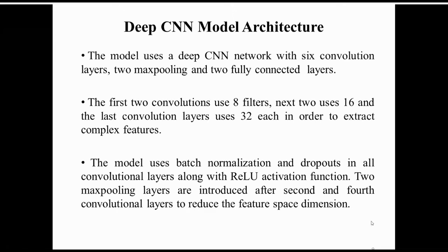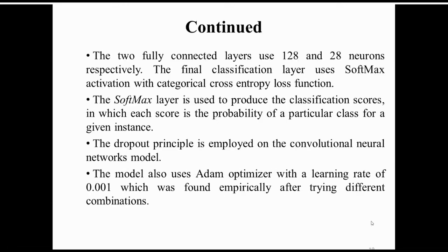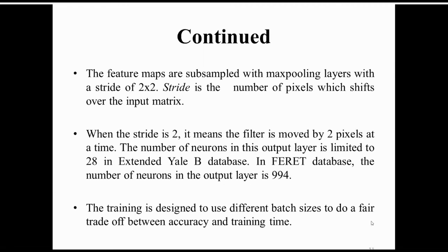The classification layer uses a softmax activation with a categorical cross-entropy loss function. The softmax layer produces classification scores where each score is the probability of a particular class for a given instance. The dropout principle is employed on the CNN model. We use the Adam optimizer with a learning rate of 0.001, found empirically. Feature maps are subsampled with a max pooling layer of size 2×2 with a stride of 2.